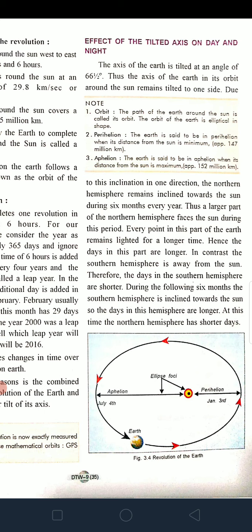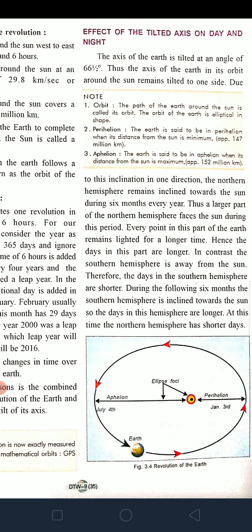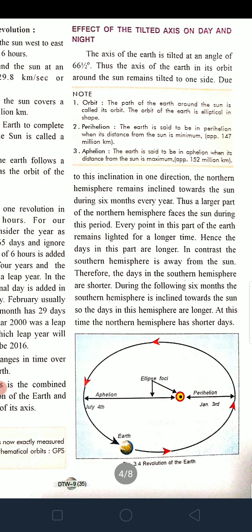Due to this inclination in one direction, for six months the northern hemisphere is facing the Sun, and for the following six months the southern hemisphere is facing the Sun. When the northern hemisphere faces the Sun, it has longer days. When the southern hemisphere faces the Sun, there are longer days in the south and shorter days in the north — meaning winter season in the northern hemisphere.